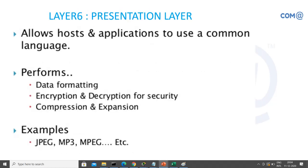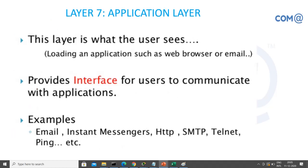The sixth layer is the presentation layer, which prepares data for the application layer. Activities here include data formatting, encryption, decryption, compression, and expansion. The data at this layer is in a system-understandable format — not directly readable by users — and is presented to the application layer for final processing. Examples of formats at this layer include JPG, MP3, and MPEG.